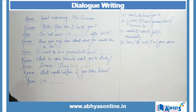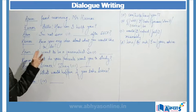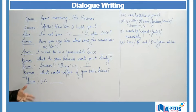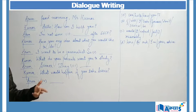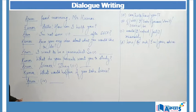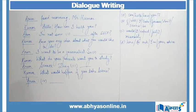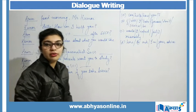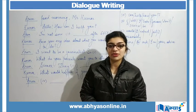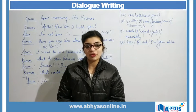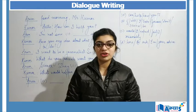The conversation is between Mr. Arun and Mr. Kumar. Arun says 'Good morning, Mr. Kumar.' Kumar replies 'Hello, how can I help you?' Arun says 'I am not sure' — then there is a blank. Kumar asks 'Have you any idea about what you would like to do?' Arun says 'I want to become a journalist' — then another blank. Kumar asks 'What do your parents want you to study?' Arun replies 'Science' — then another blank. Kumar says 'What would happen if you take science?' — then a final blank.